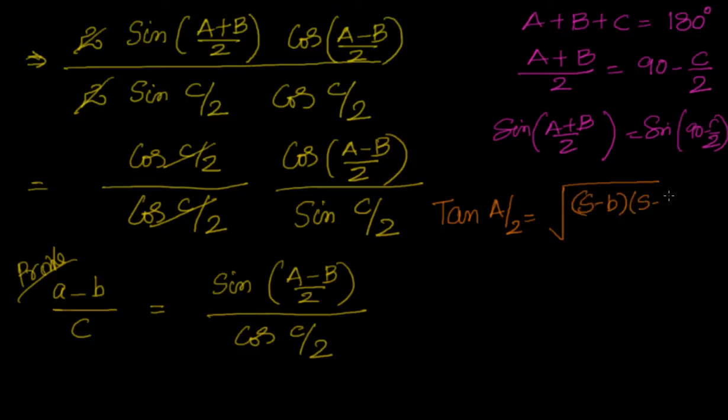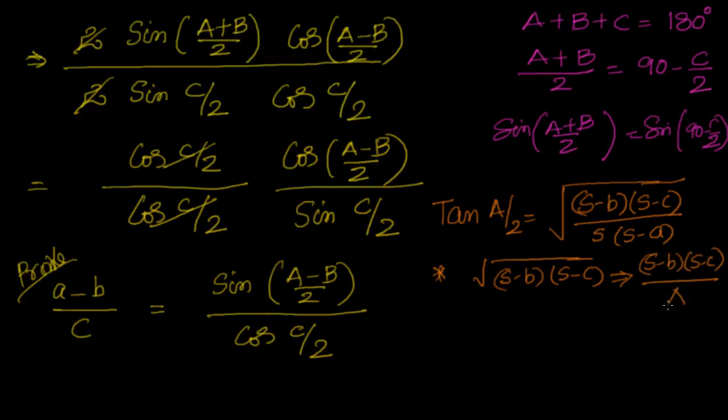And cos(A/2) will have s and a. So this is what is tan(A/2). We saw that if I multiply with s times (s-a), if I multiply with square root of (s-b)(s-c), similarly, if I multiply with (s-b)(s-c) by delta, then I will have delta divided by s(s-a).